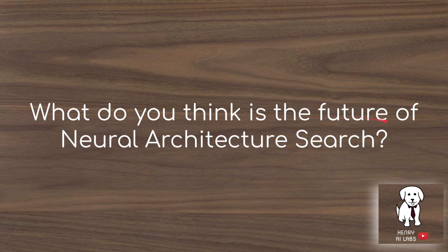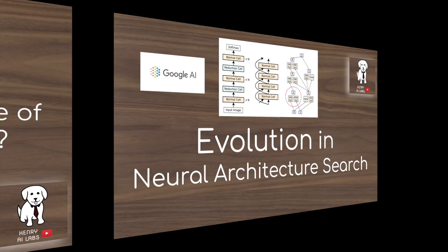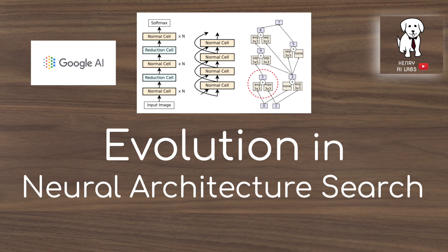What is the future of neural architecture search? Should evolutionary algorithms and the NasNet search space account for other hyperparameters like learning rate and optimization parameters? Please leave your comments. Thanks for watching this video from Henry AI Labs on evolution and neural architecture search — please subscribe for more deep learning and AI videos.